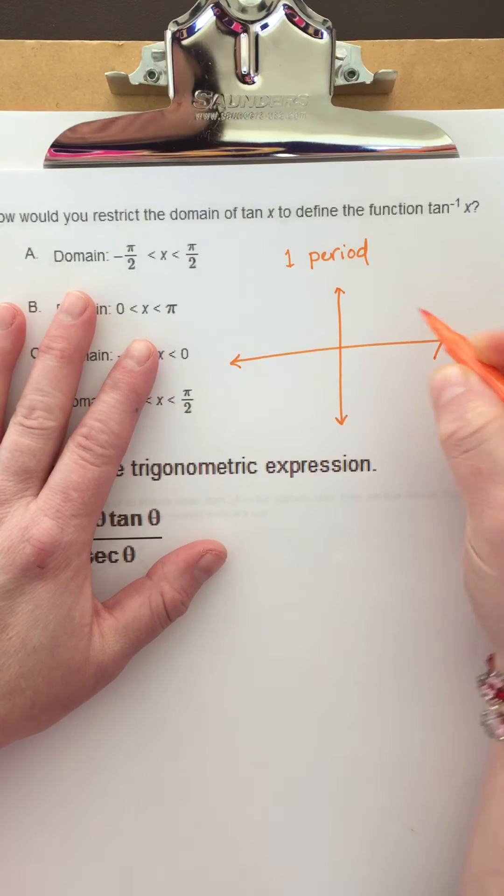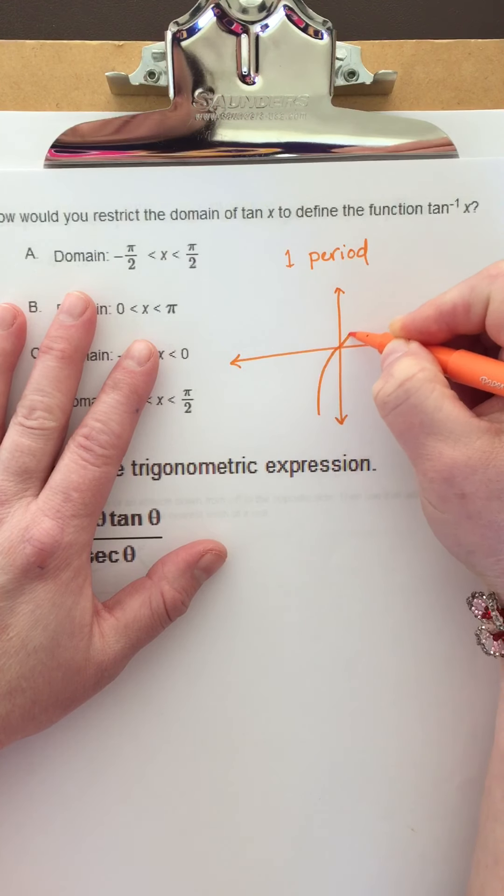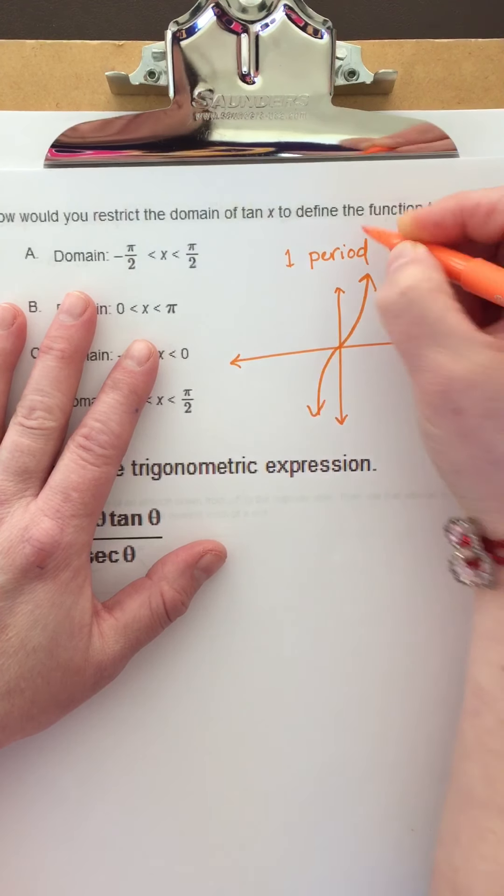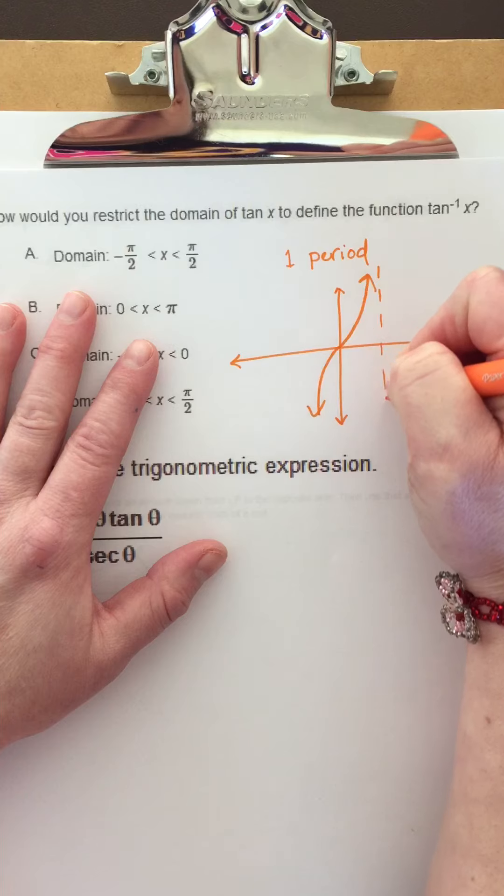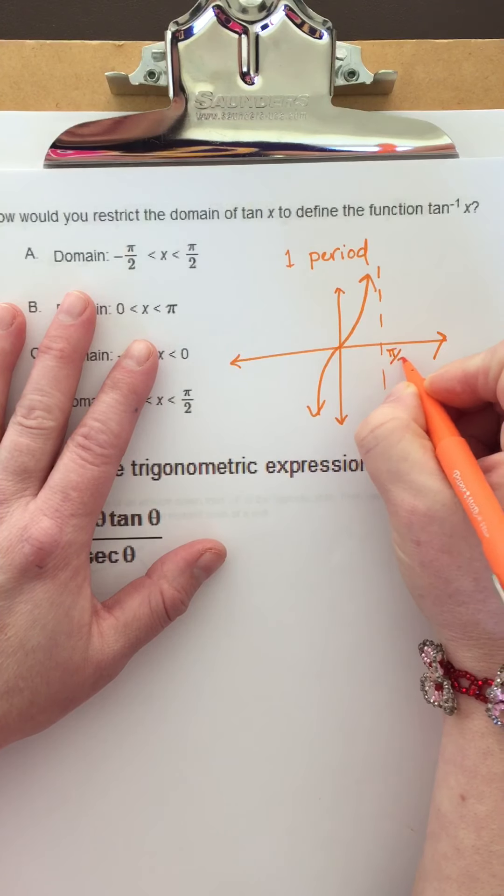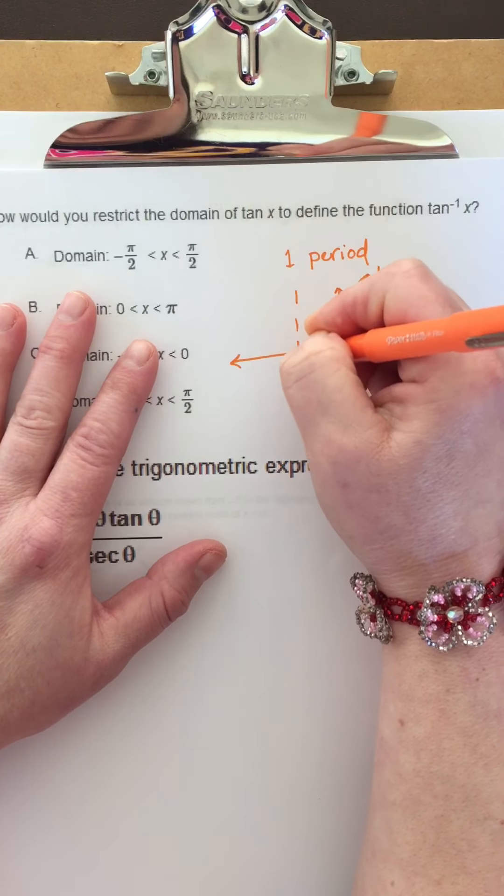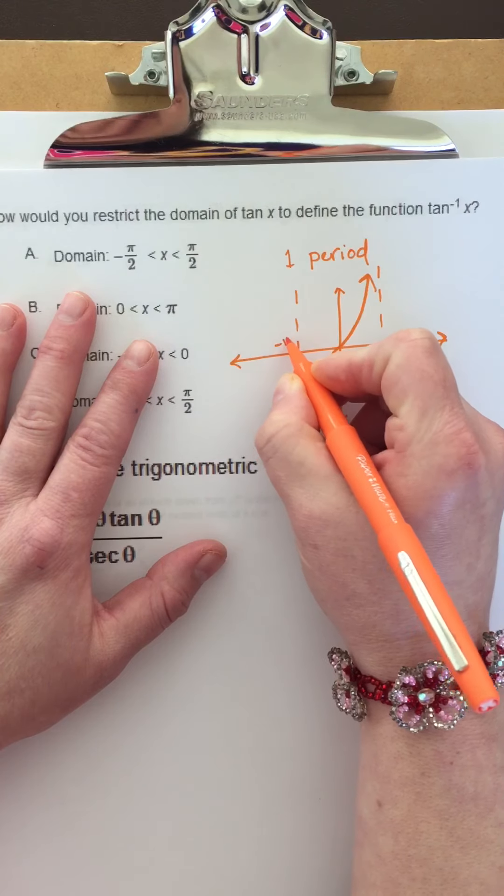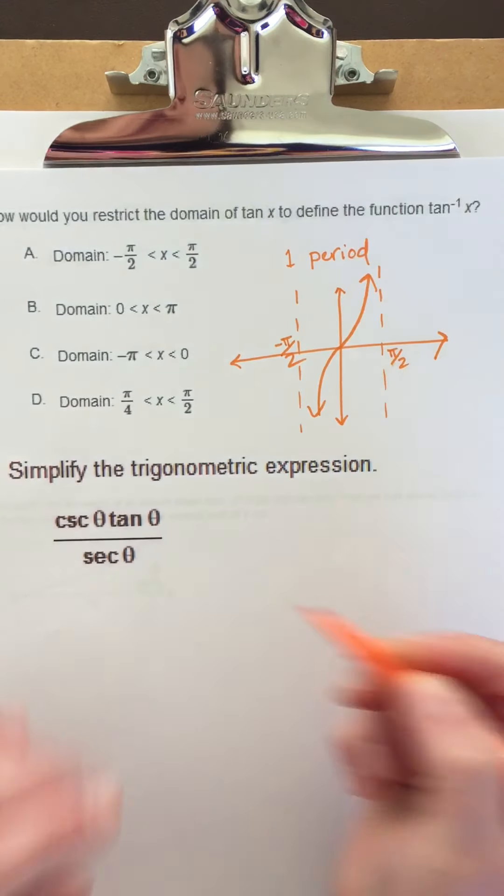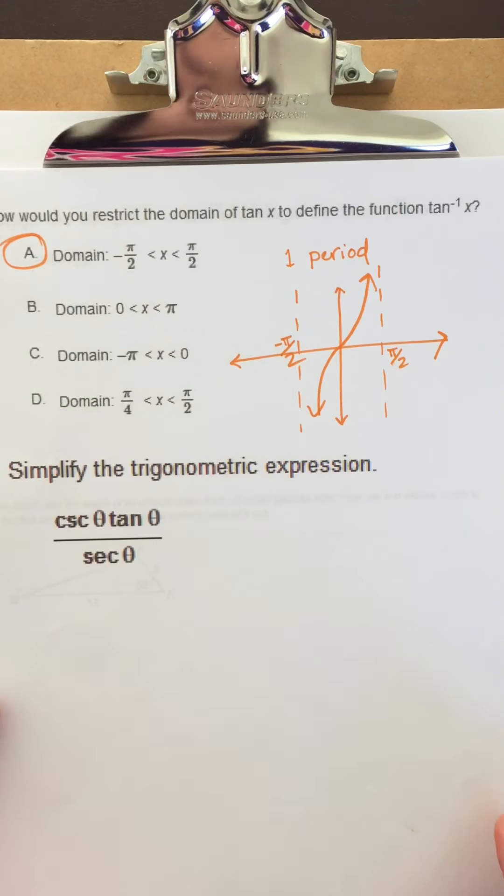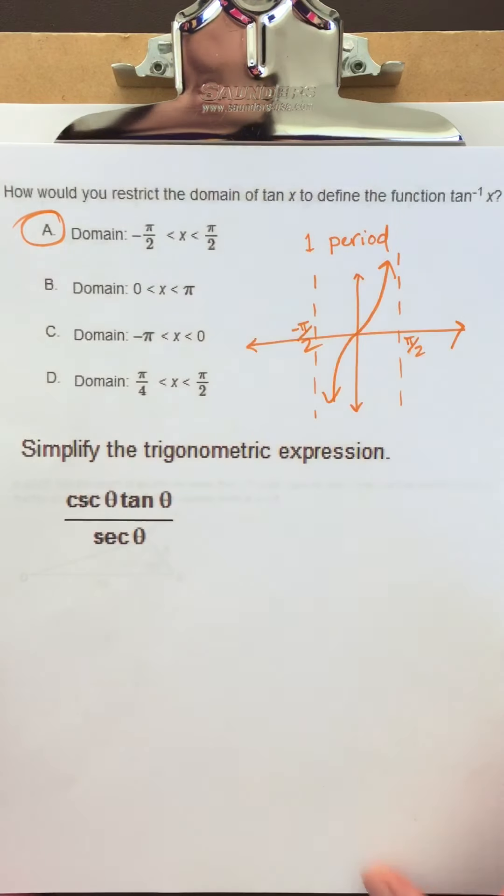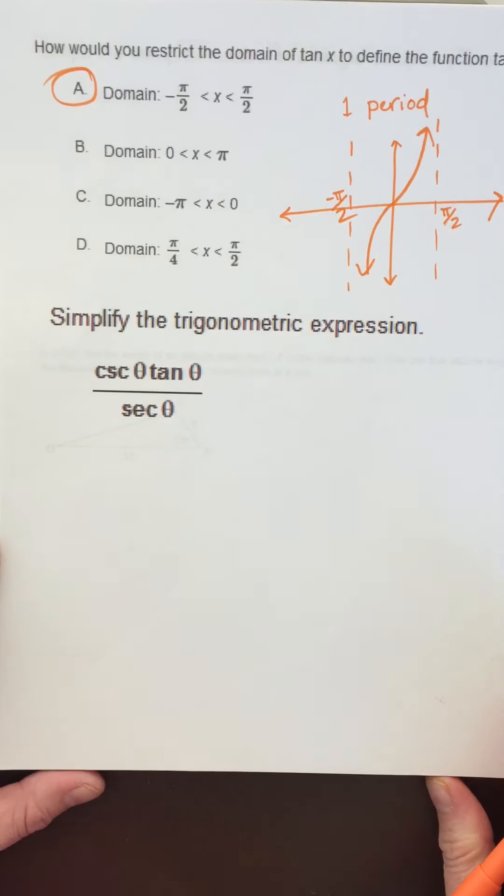If you think about the graph of tangent, there was an asymptote at pi over 2 and an asymptote at negative pi over 2. So the answer would be A. You didn't have to do all that, but I was just showing you. Let's look at the next one.